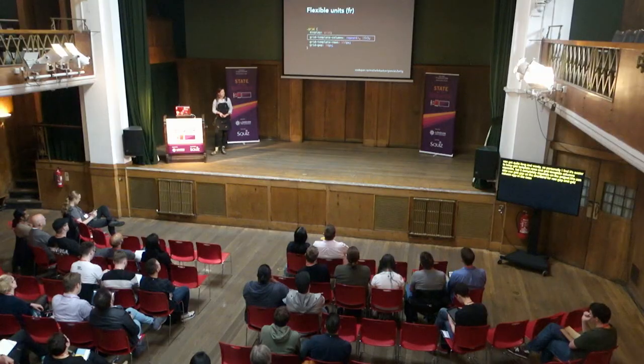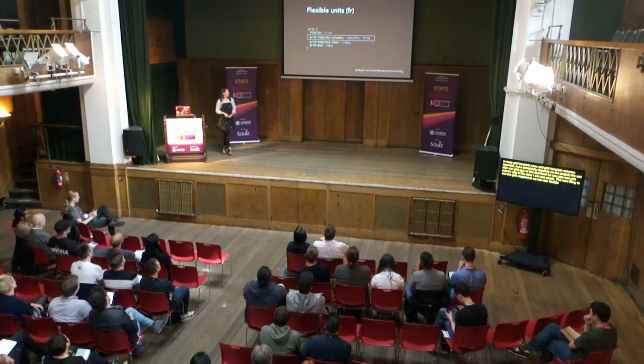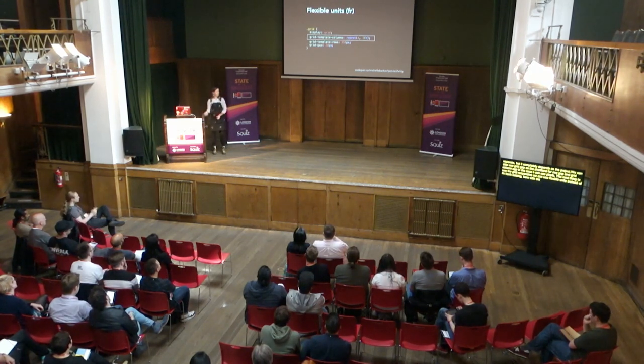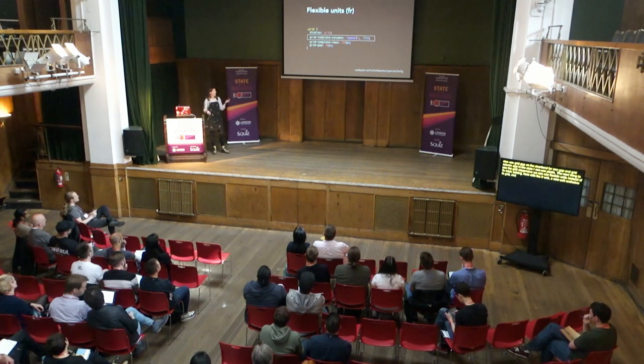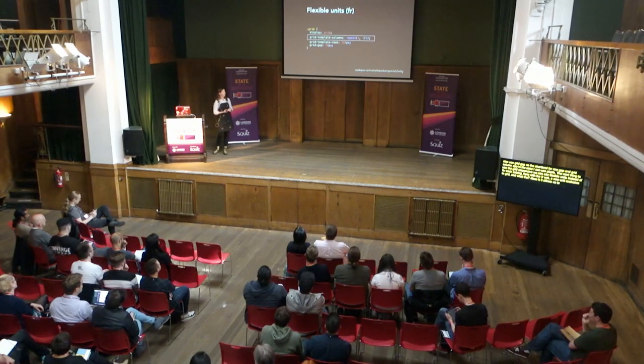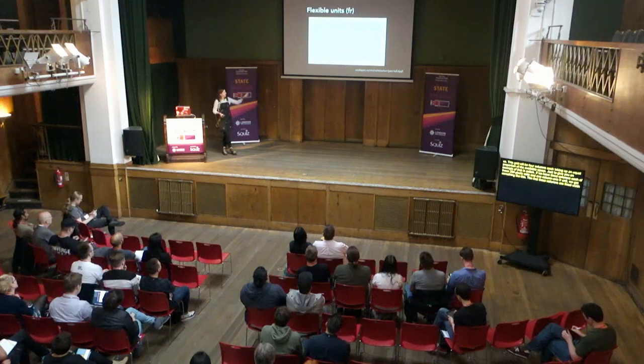To make our grid responsive, we can use flexible units instead of fixed track sizing. Here I'm using the FR unit, which is a new unit exclusive to grid. It allows us to define tracks that take up a proportion of the available space, taking gutters into account. With grid, there really isn't much need anymore to use percentage sizes and calc, because the FR unit does a lot of the heavy lifting. So this grid will have four columns, each taking up an equal proportion of the available space. For example, if we have three columns of 200 pixels and one column of 1FR, that fourth column takes up all the remaining space.